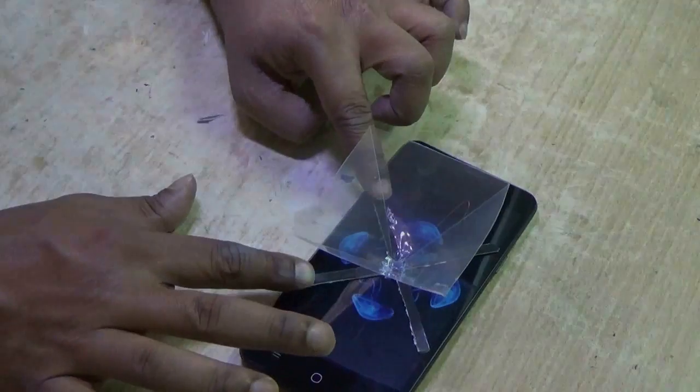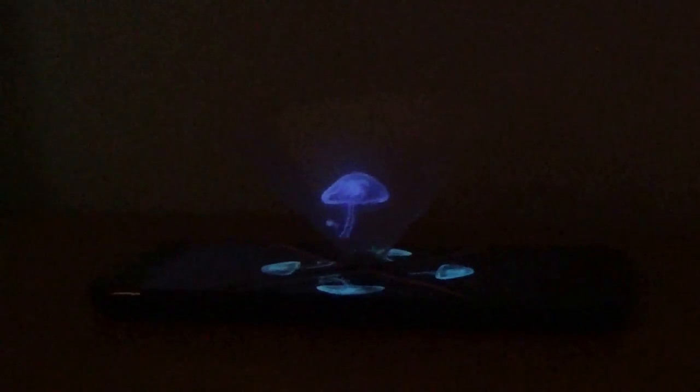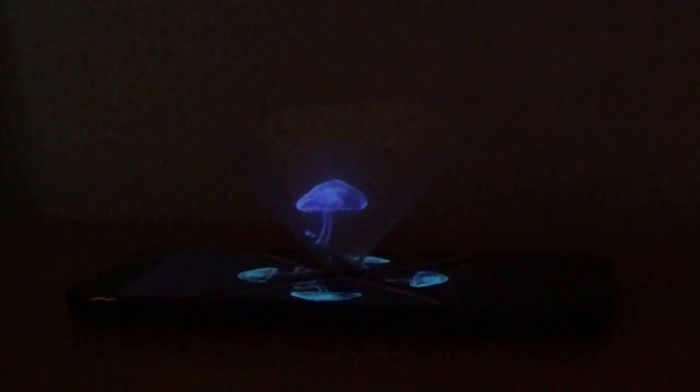Now if you see from the side, you can see a 3D image is created at the center, like this bird. Actually there are four bird pictures coming from the screen of the mobile phone and creating a 3D image there.